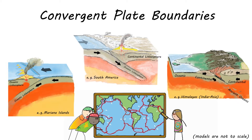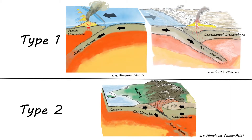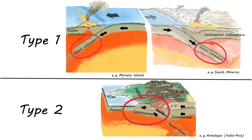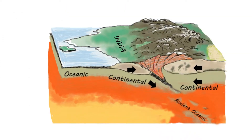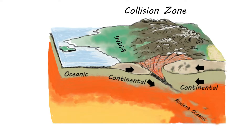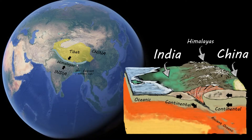There are two different types of convergent margins, depending on whether the subducting plate is continental or oceanic. If a continental plate subducts beneath another continental plate, we have a collision zone, where continental crust is folded, faulted, and pushed under the other plate, creating mountain ranges like the Himalayas.